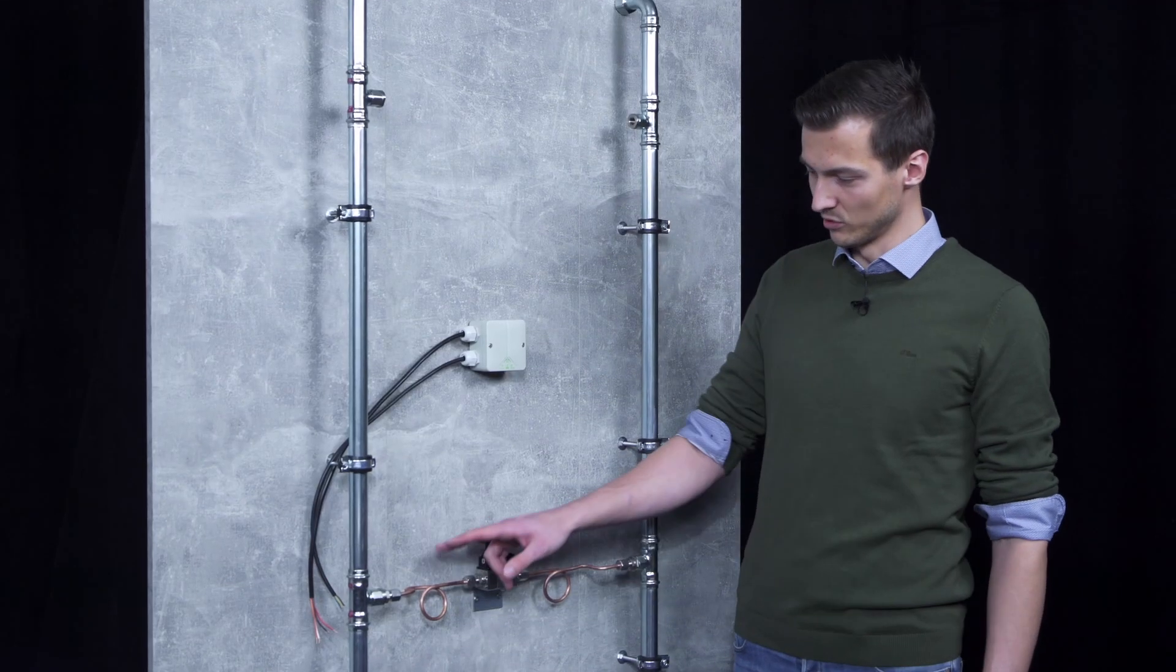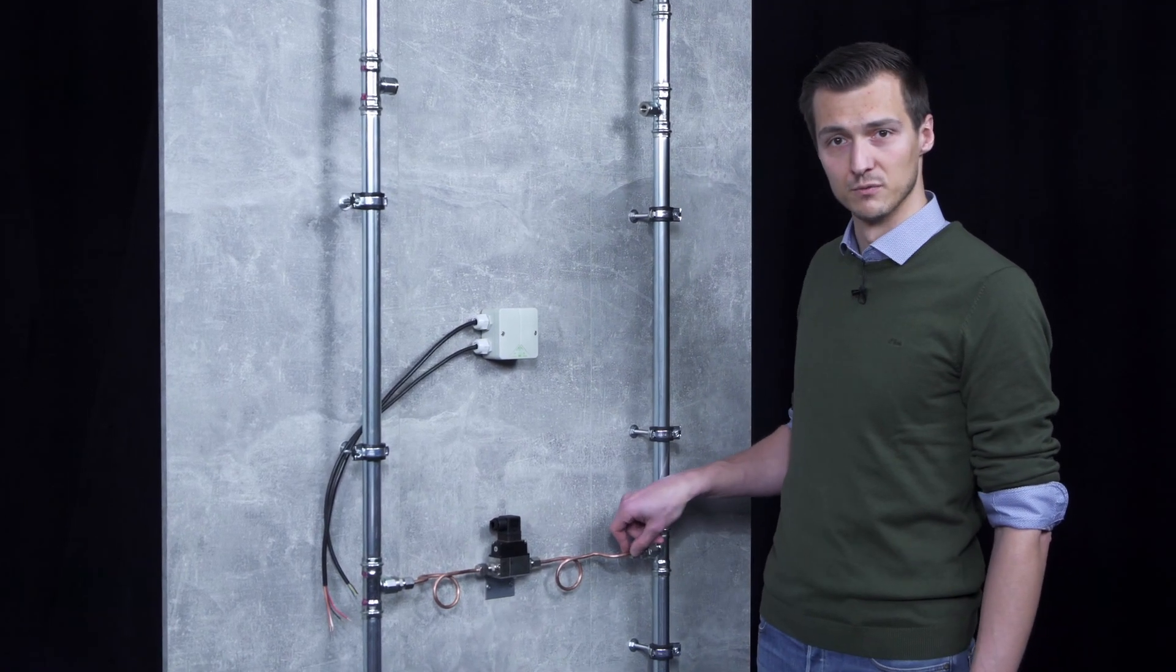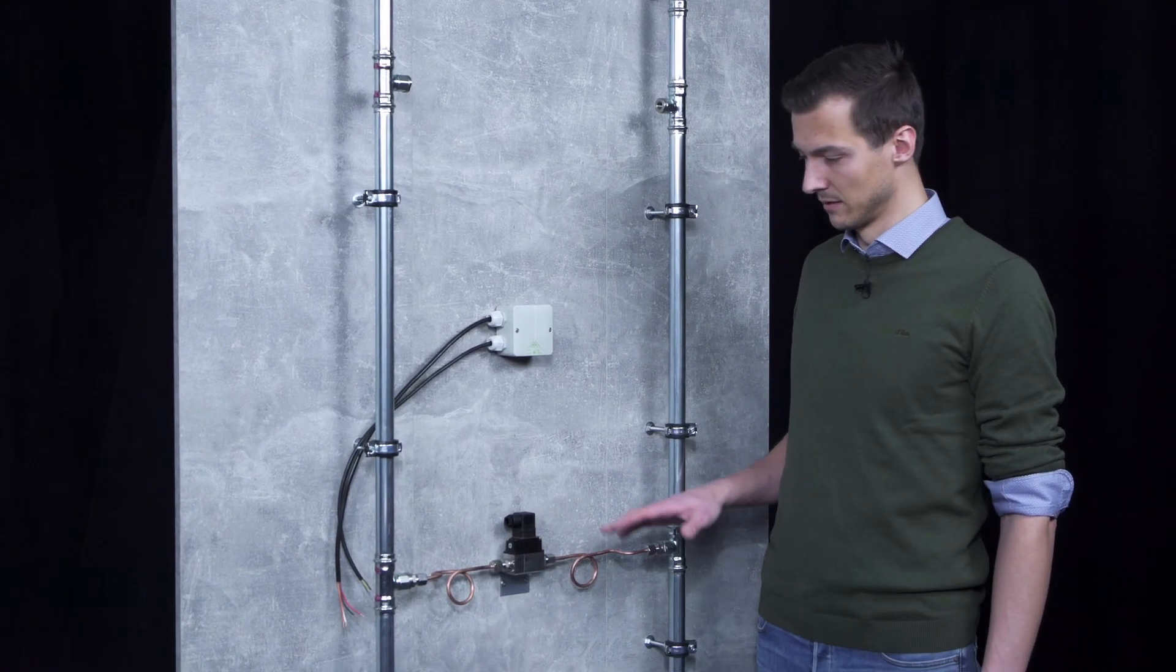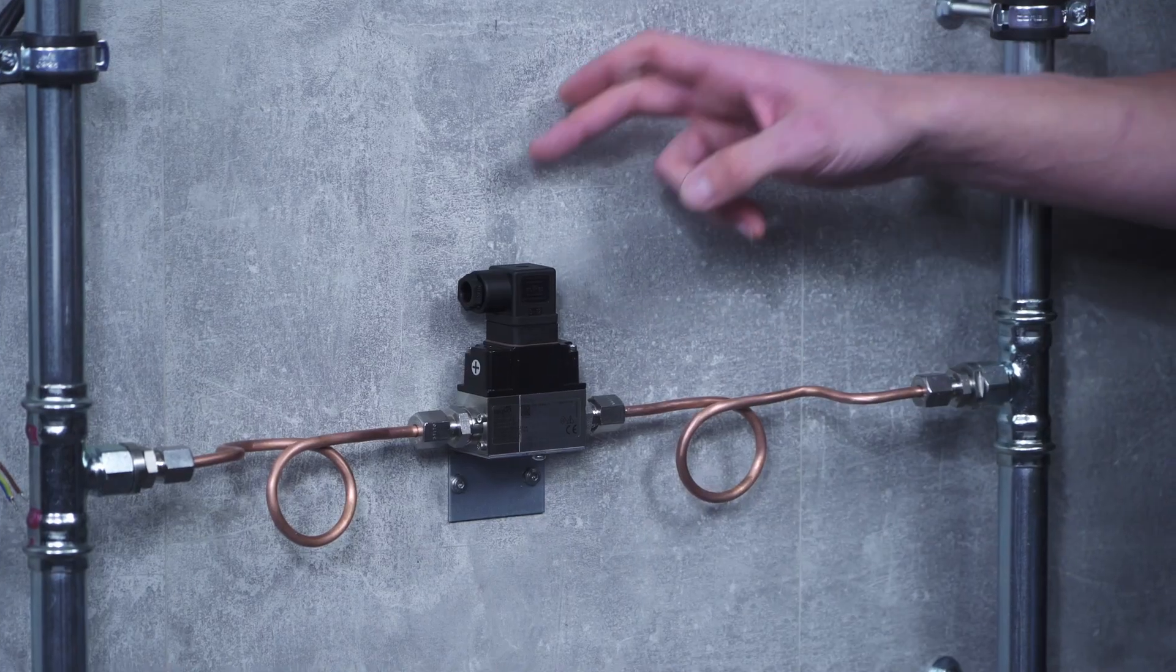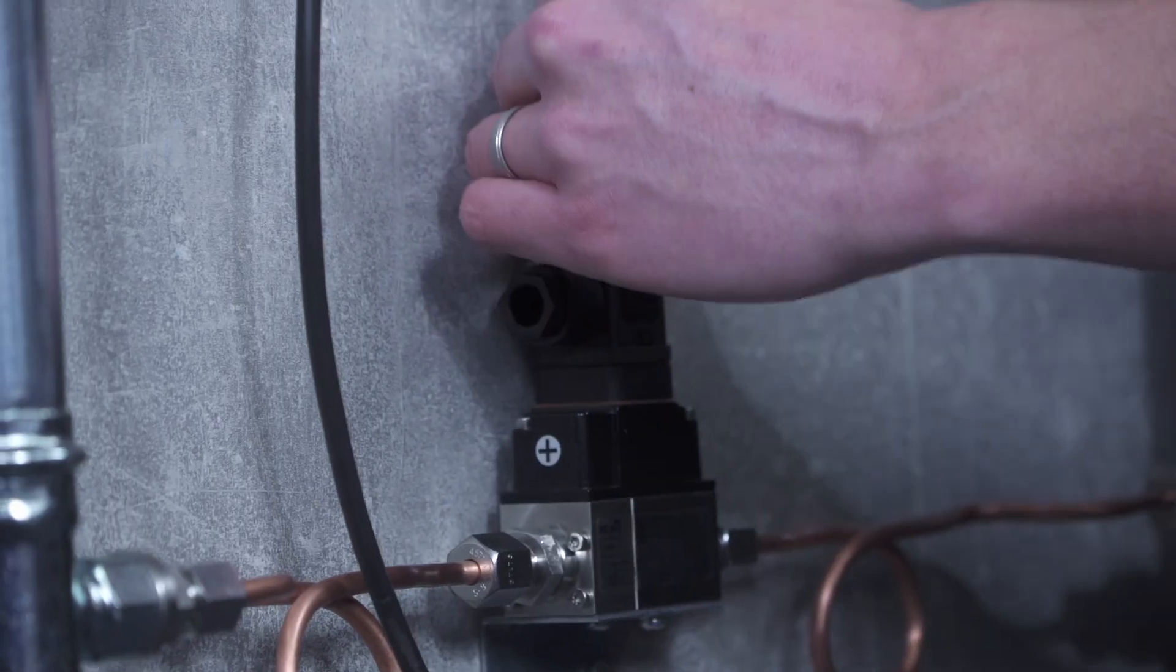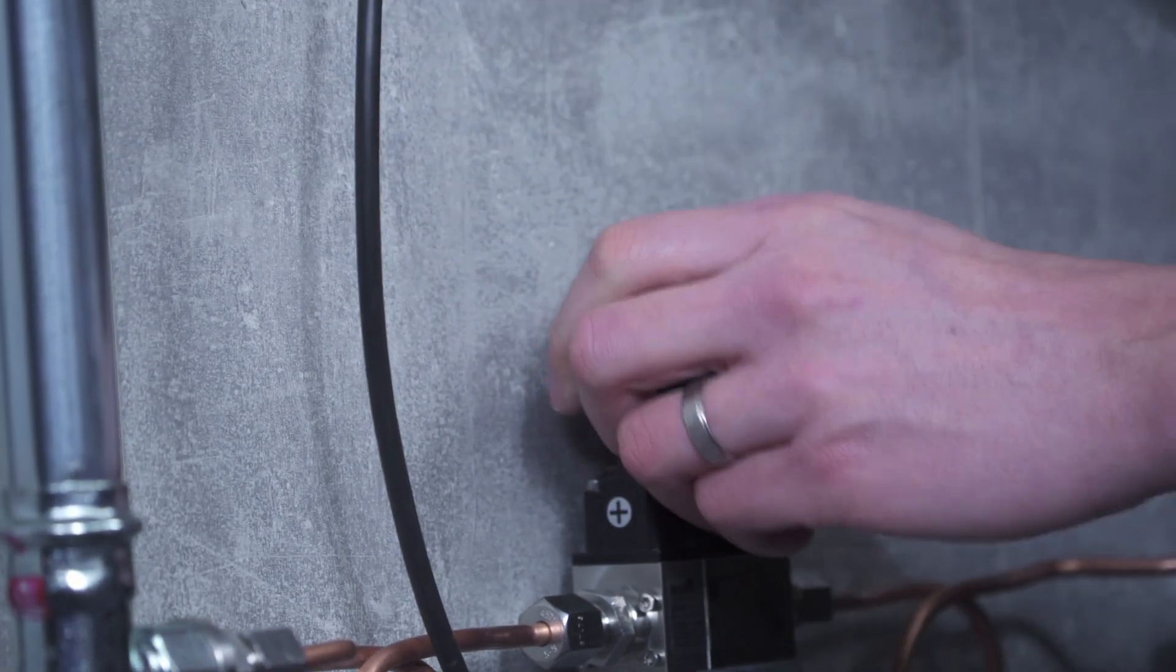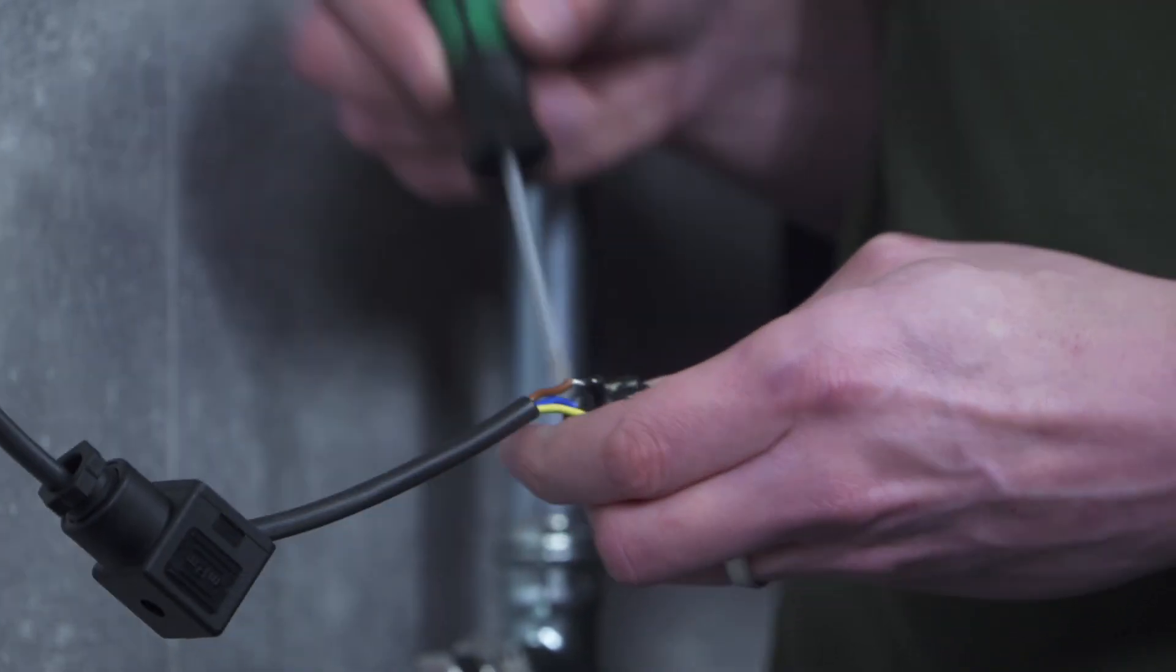I have now fitted both impulse lines, tightened the union nut so that the cutting ring seal, which completes the mechanical hydronic installation. We can now move to the electrical side. The connector plug is used for the connection. We first remove the plug and then route the cables to the plug accordingly.